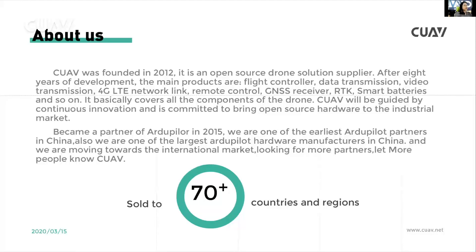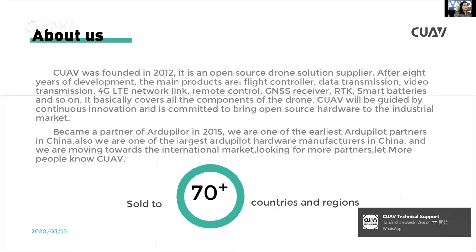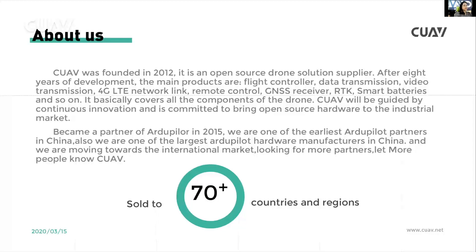CUAV's product range covers all the common components of a drone. CUAV continues to innovate and bring open-source hardware to the industry market. We became a partner of ArduPilot in 2015 and are one of the earliest autopilot partners in China, and one of the largest autopilot hardware manufacturers in China. We are moving towards the international market and have sold to more than 70 countries.